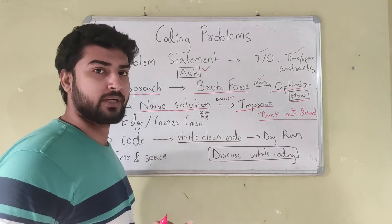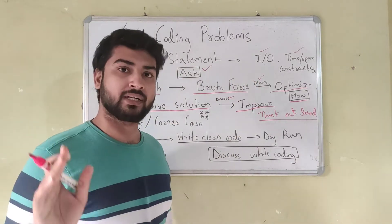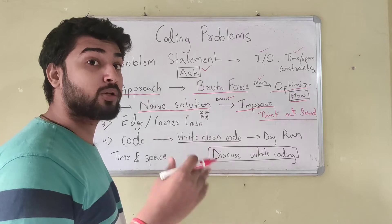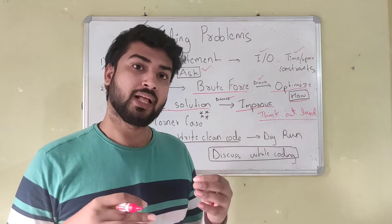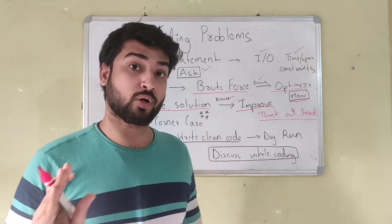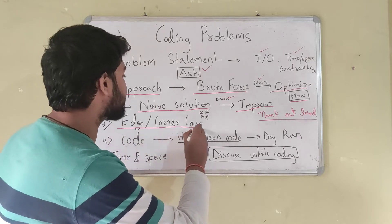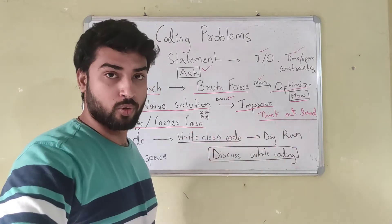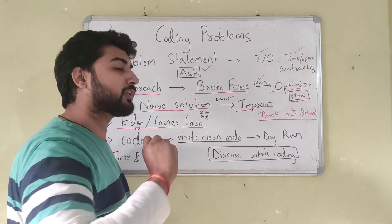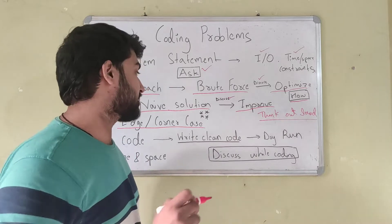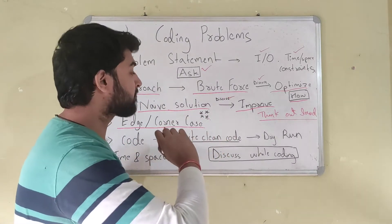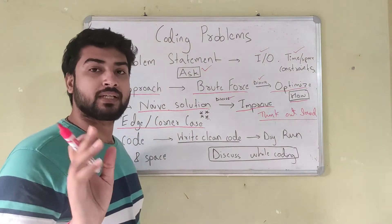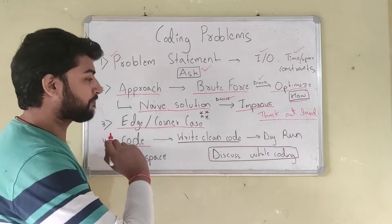Once you have a clear approach, be very careful about edge cases and corner cases — this is something a lot of people miss. They find an approach and go straight into coding without thinking of edge cases. If one edge case is failing after you've written the code, you can't go back and change your whole approach. So while thinking of the approach, make sure you keep edge cases and corner cases in mind. This is very important.